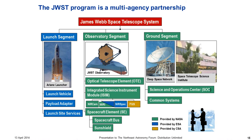The JWST project is the largest science project the United States is doing today and has ever done in its history — much too large for any single agency to do alone. So it's a partnership among NASA, the European Space Agency, and the Canadian Space Agency. The Canadian Space Agency is providing the fine guidance sensor, which also does some science. The European Space Agency is providing one and a half science instruments and also the rocket. NASA is doing everything else.